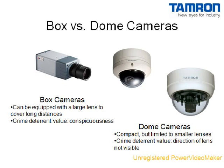Dome cameras are generally more compact than box cameras, but this also limits the size of the lens. It is important to remember that some long-range lenses may be too large to fit inside a dome camera. Dome cameras can be effective crime deterrents because the direction of the lens is often not visible, making it difficult to guess the area of coverage.